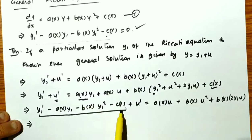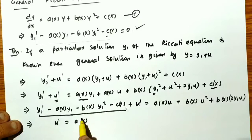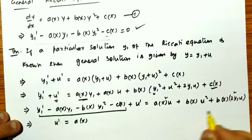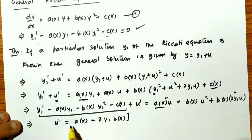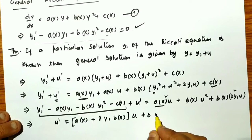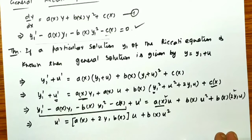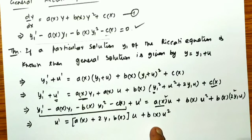So we have u' = a(x)u + 2y₁b(x)u + b(x)u². The equation is: du/dx − [a(x) + 2y₁b(x)]u = b(x)u². If you look carefully, this equation is known as a Bernoulli equation. To simplify it, just divide by u².